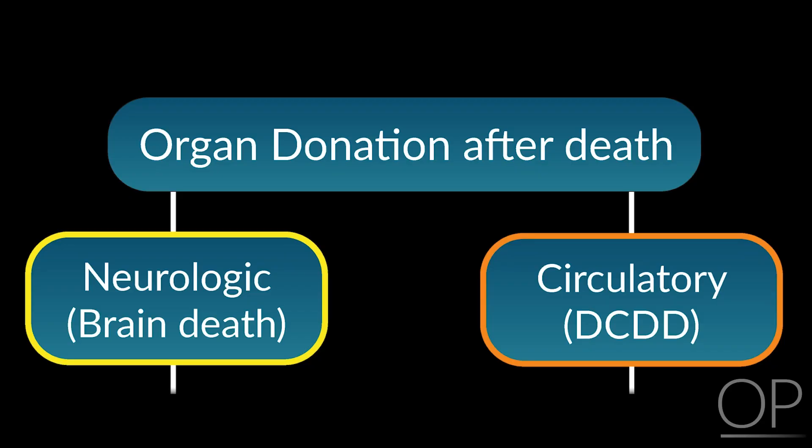There are two pathways to organ donation at the end of a patient's life. The most common pathway since the late 1960s has been donation after neurologic determination of death, or donation after brain death. A more recent option for families is donation after circulatory determination of death, or DCDD, which was previously called donation after cardiac death.